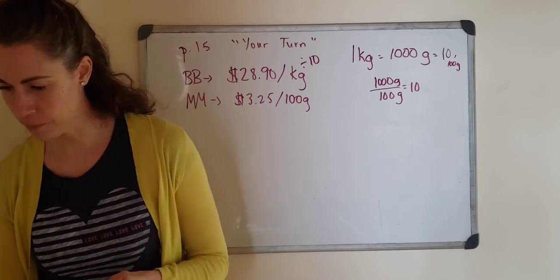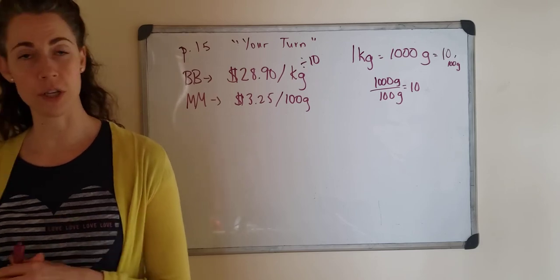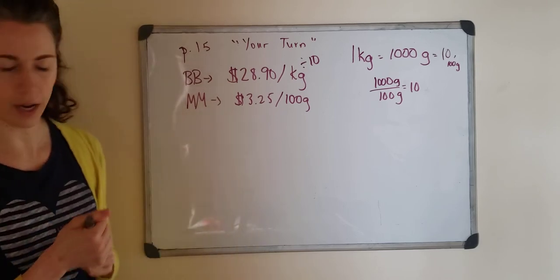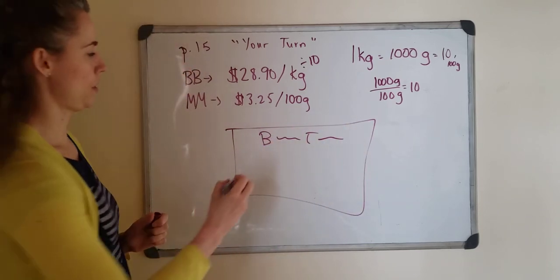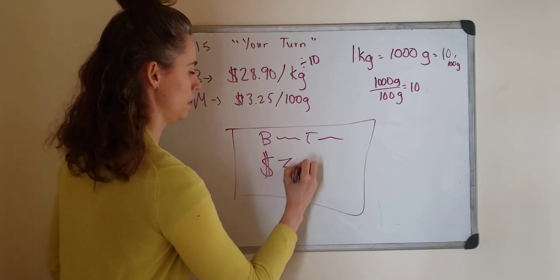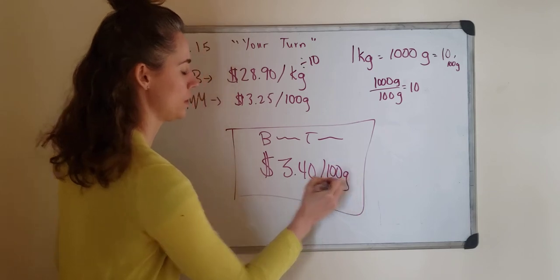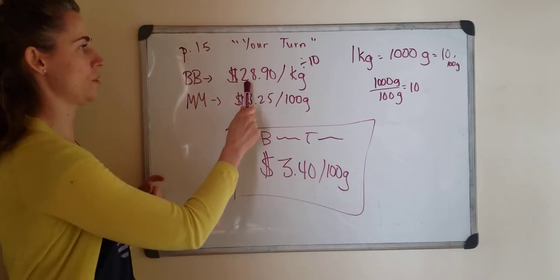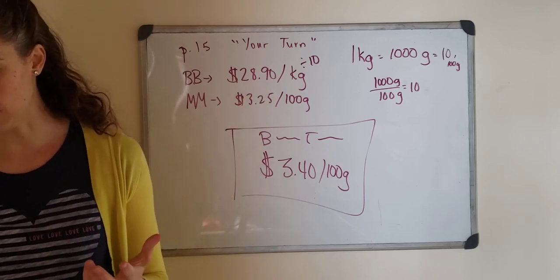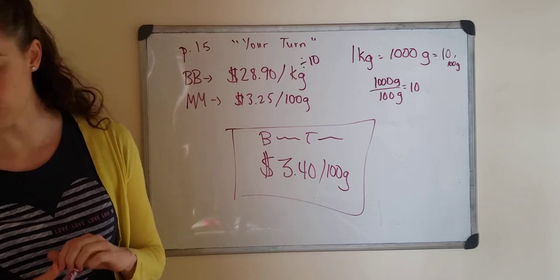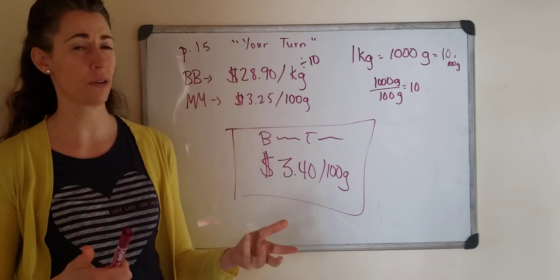D says the Butcher Block changes its sign on its beef tenderloin as shown. Give one reason for this change. You can see the new sign in your book. It says beef tenderloin $3.40 per 100 grams. So before they used to have it advertised like $28.90 per kilogram and now the price has gone up to $34.